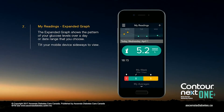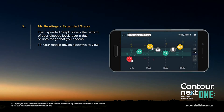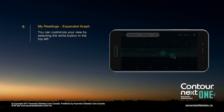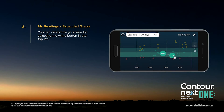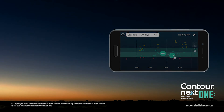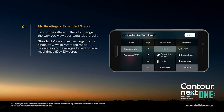The expanded graph shows the pattern of your blood glucose levels over a day or date range that you choose. Tilt your mobile device sideways to view the expanded graph.